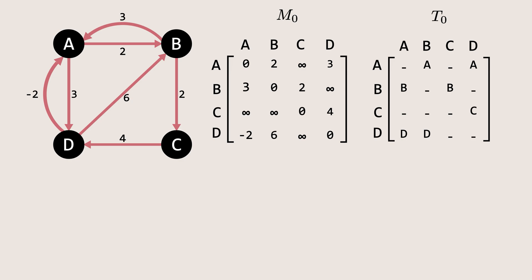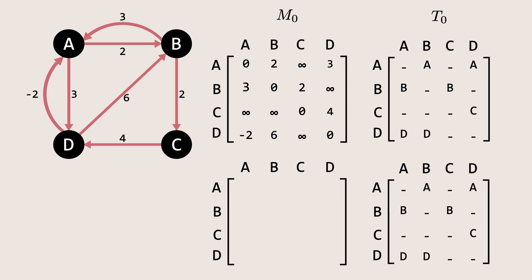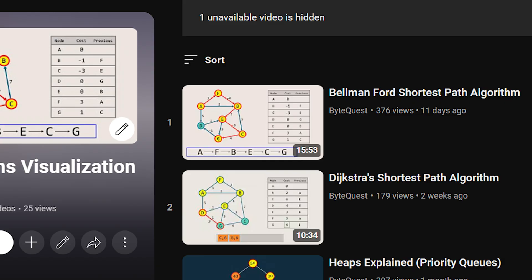Let's find the next matrices in the following iteration. Keep in mind, the matrices shown below are purely for demonstration purposes. In reality, only one instance of these matrices exists and gets updated dynamically. This visual breakdown is just to help you understand how the algorithm works. Let's start finding shorter paths via node A first. The rows and columns connected to A will not be updated because they already represent the direct connections. Additionally, the diagonal elements will remain unchanged, as updating them would imply the presence of a negative weight cycle. If you're unfamiliar with negative weight cycles, I recommend checking out our video on the Bellman-Ford algorithm for a detailed explanation.